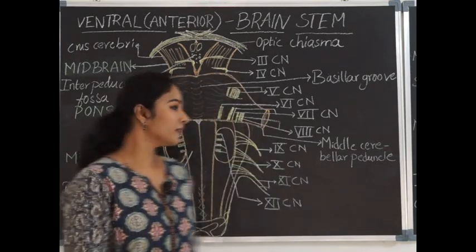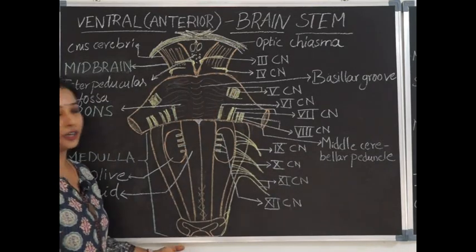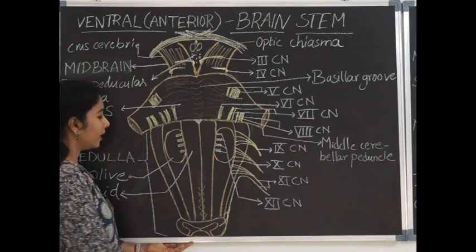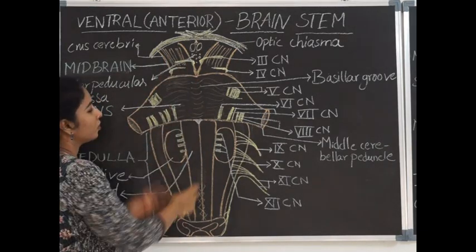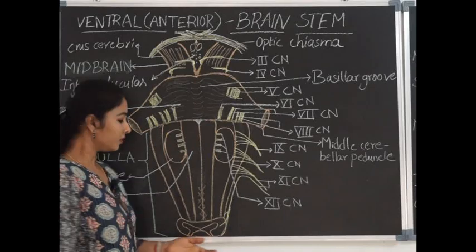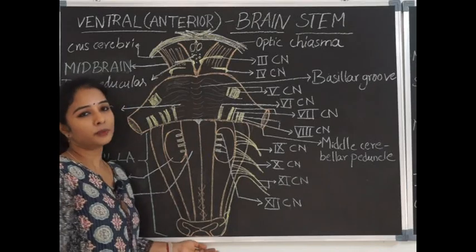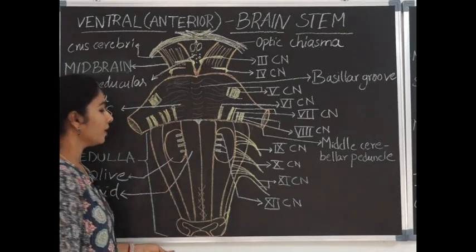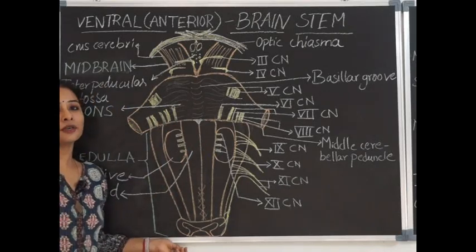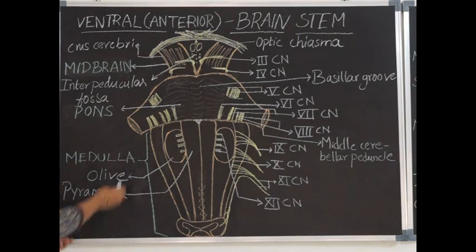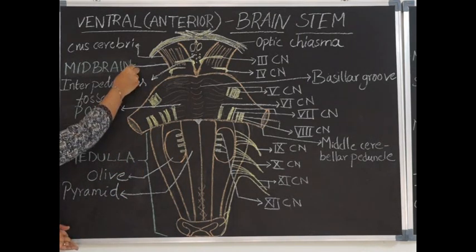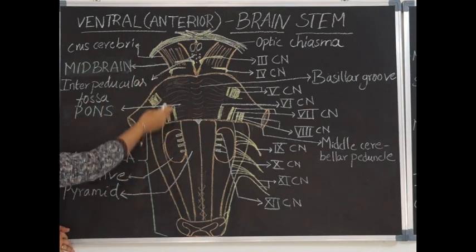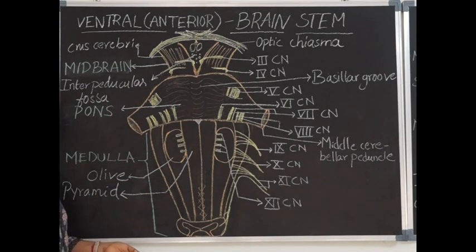Brainstem is the continuation of spinal cord above and it continues above as the forebrain. Brainstem is a stalk-like structure which is connecting the spinal cord and the forebrain. Brainstem from below downwards, it is formed by the medulla oblongata, pons and midbrain. All three structures together are called as brainstem.